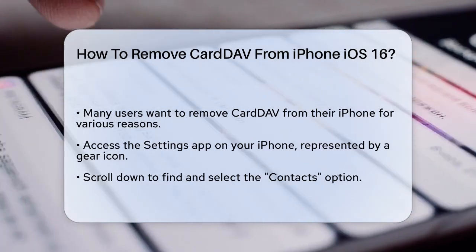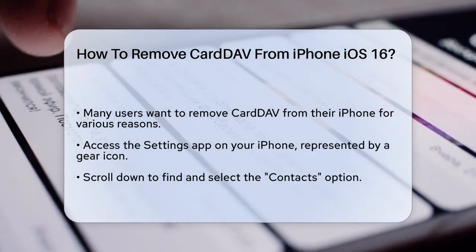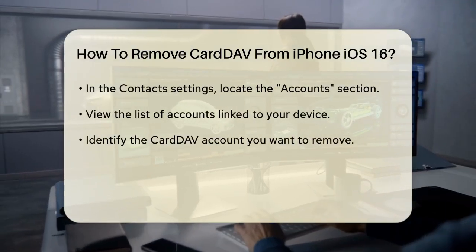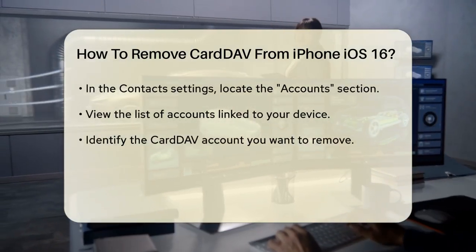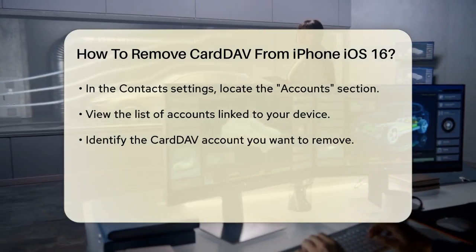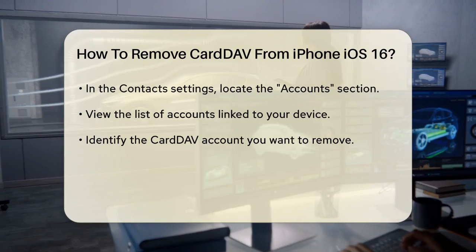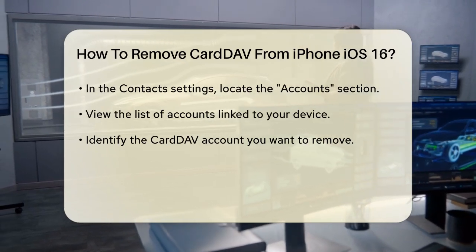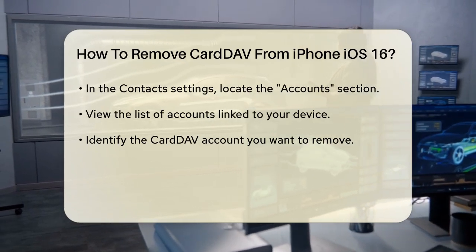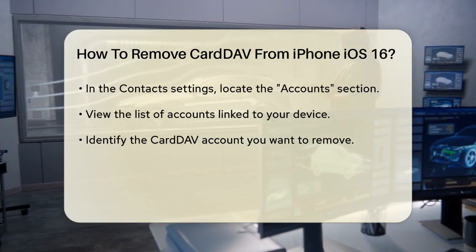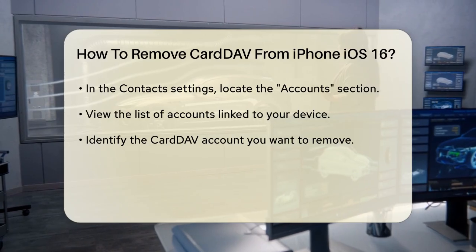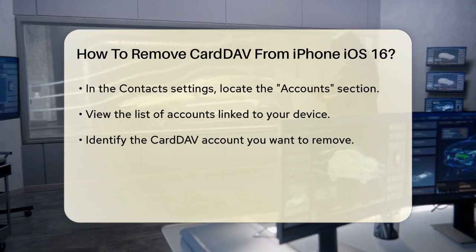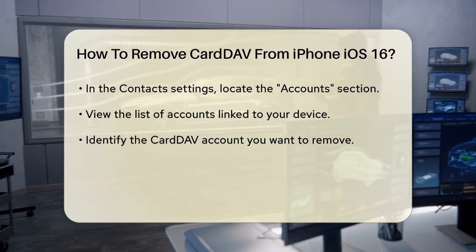First, you will need to access the Settings application on your iPhone. This is the gear icon typically found on your home screen. Once you are in Settings, scroll down until you find the option labeled Contacts. Tap on it to proceed.